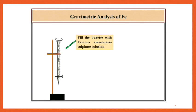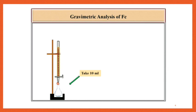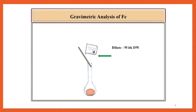Procedure: Fill the common burette with the solution of Ferrous ammonium sulphate. Then take 10 ml Ferrous ammonium sulphate solution directly in the 100 ml volumetric flask.